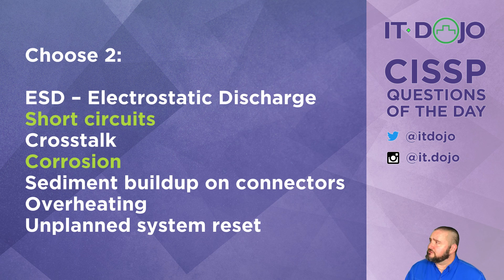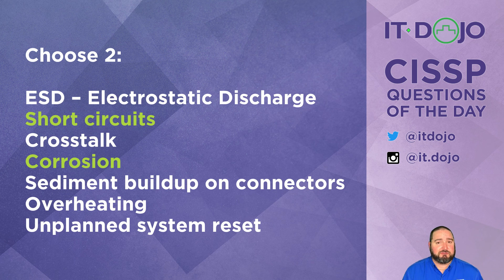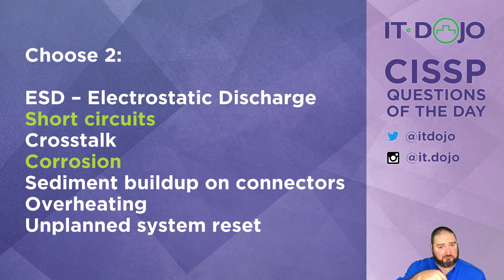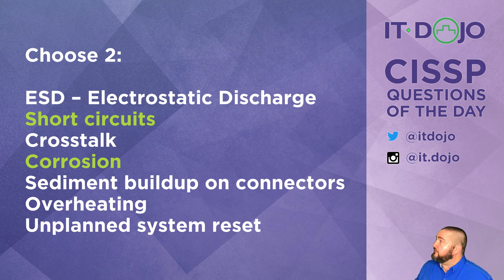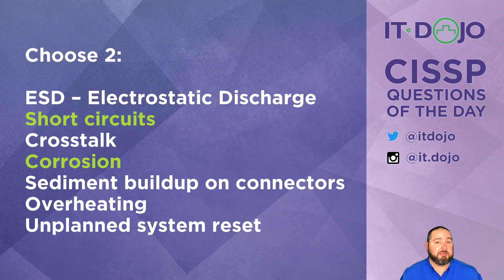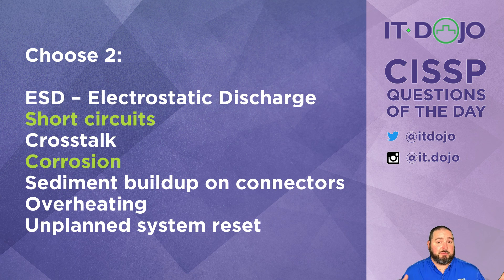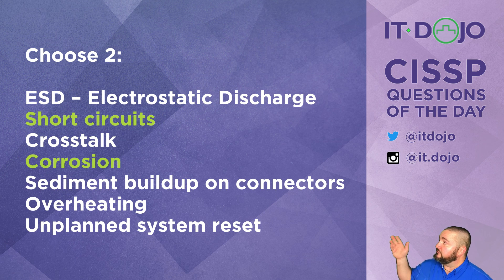The remaining options — sediment buildup on connectors, overheating, and unplanned system reset — are ones I made up to distract you. Sediment buildup isn't typically a documented concern; overheating isn't something we worry about when humidity is too high; and unplanned system reset sounds compelling but isn't correct. When picking two, the best answers are corrosion and short circuits.